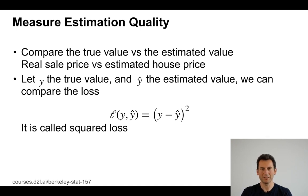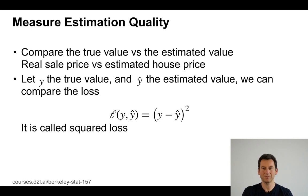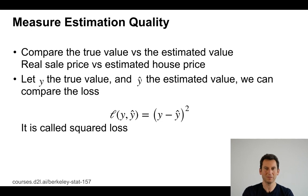One way of measuring accuracy is by taking the difference between what we predict and what we actually observe — so y minus y-hat. We could take the absolute value of that, or we could take the squared value. The reason to pick the square is that taking derivatives of it is very nicely analytically tractable. Also, a quadratic loss corresponds to the assumption that what we're observing is the true value corrupted with Gaussian noise, and that's exactly what the squared loss does.